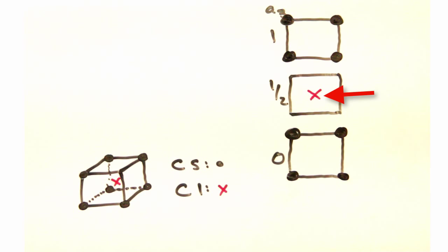From this, it's fairly easy to see the chlorine atom is surrounded by eight cesium atoms, giving it a coordination number of eight. But even I can draw cesium chloride fairly well.